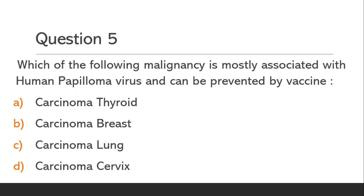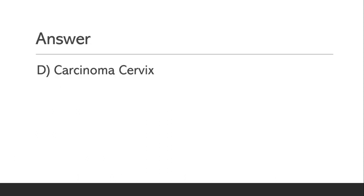Question 5. Which of the following malignancies is mostly associated with Human Papilloma Virus and can be prevented by vaccine? Option A: Carcinoma Thyroid. Option B: Carcinoma Breast. Option C: Carcinoma Lung. Option D: Carcinoma Cervix. The answer is Option D: Carcinoma Cervix.